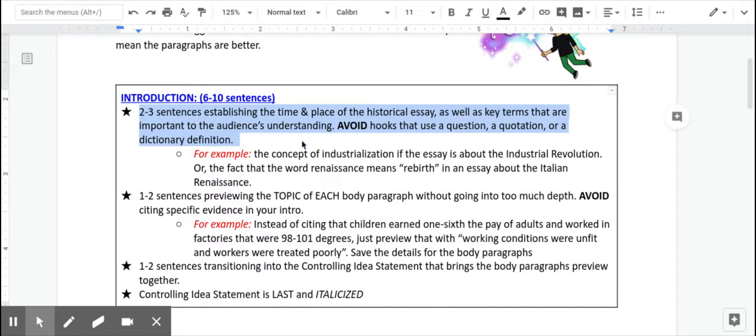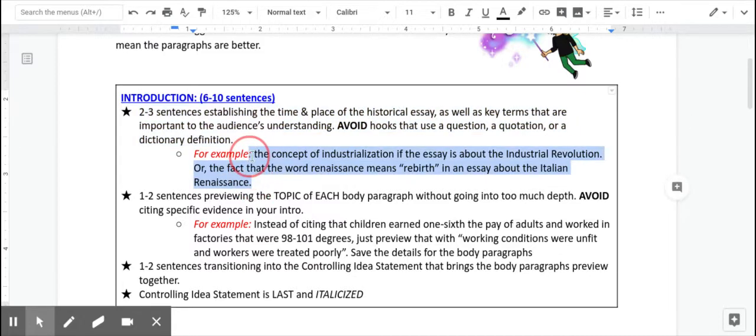I have some examples here for what I mean about key terms. This is obviously not what your essay is about right now, but these are two topics that we've studied, so I thought I could use them to help you make a connection. So if your essay is about the industrial revolution, then you probably have to explain what industrialization is. If it's about the Renaissance, you probably have to explain that the word Renaissance means rebirth.